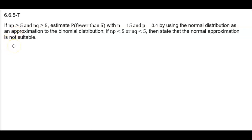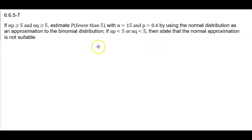If n times p is greater than or equal to 5 and n times q is greater than or equal to 5, we want to estimate the probability of fewer than 5, with n equal to 15 and p equal to 0.4, by using the normal distribution as an approximation to the binomial distribution. If n times p is less than 5 or n times q is less than 5, then state that the normal approximation is not suitable.